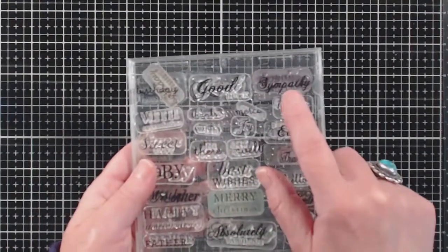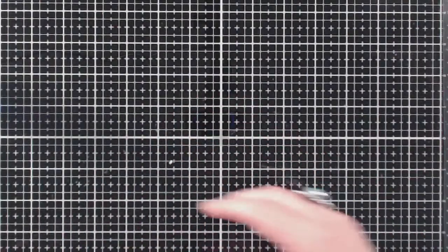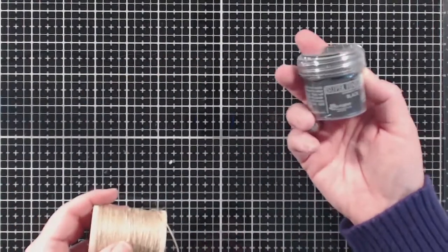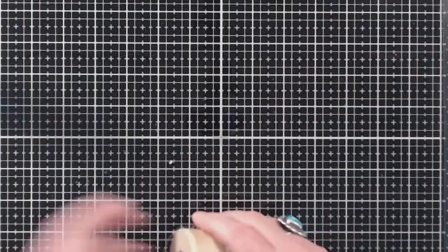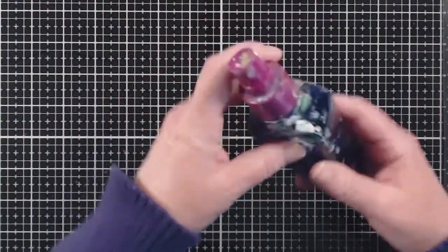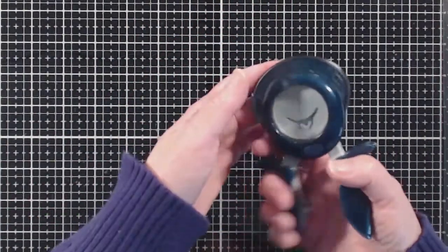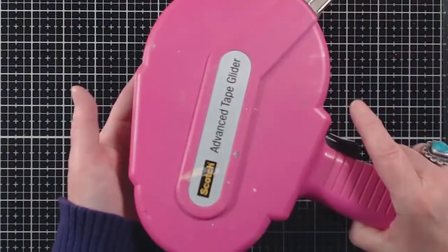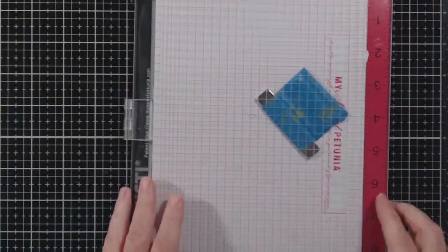This sentiment stamp set from Paper Tree Ink is no longer available but I will link to something that has some nice sympathy messages in it. I'm using Ranger embossing powder, twine from Paper Tree Ink, some Versamark, a spray bottle, and a corner rounder. Of course I'm going to be using my ATG adhesive runner and as always my Misti stamper.